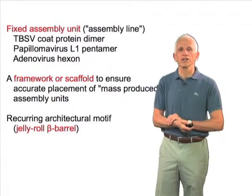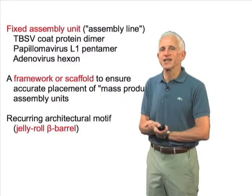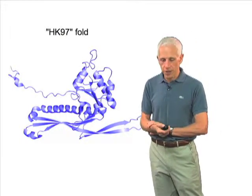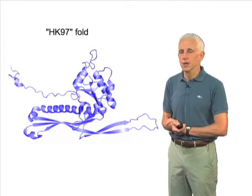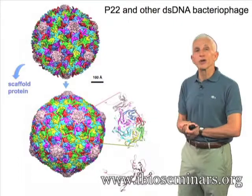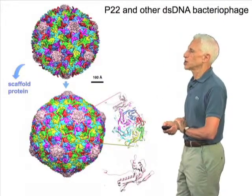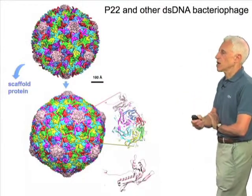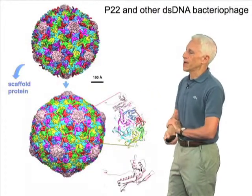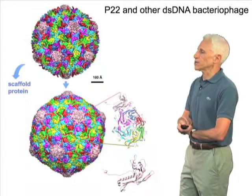You might well ask: is this the only architectural motif? Why are all viruses based on such a similar building block? The answer is that isn't the case — there's at least one other, sometimes called the HK97 fold, after the bacteriophage HK97 in which it was discovered. This protein subunit looks quite different; it has some alpha helices and a somewhat irregular-looking structure. It's found in bacteriophage P22 and a large number of other double-strand DNA bacteriophage, where subunits form both hexamers and pentamers — 60 hexamers and always 12 pentamers in any icosahedral structure.